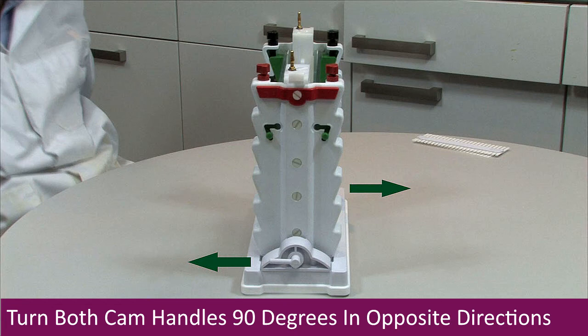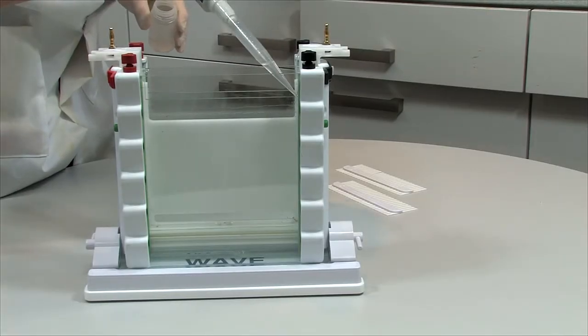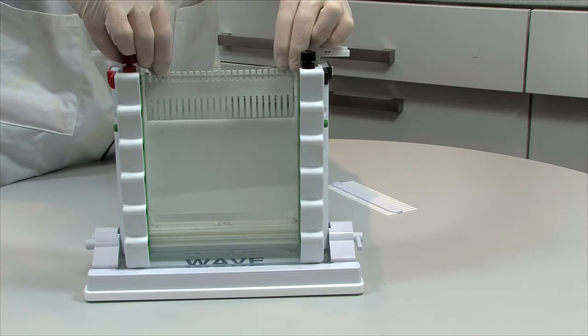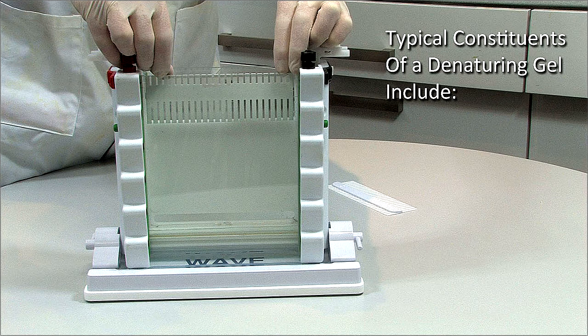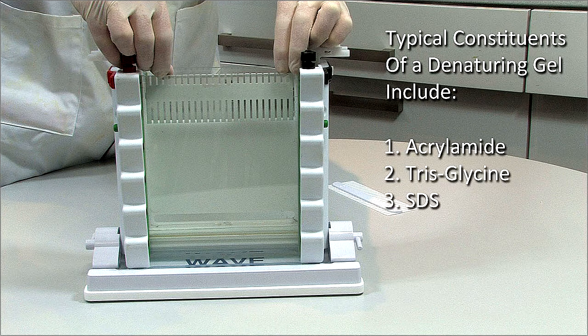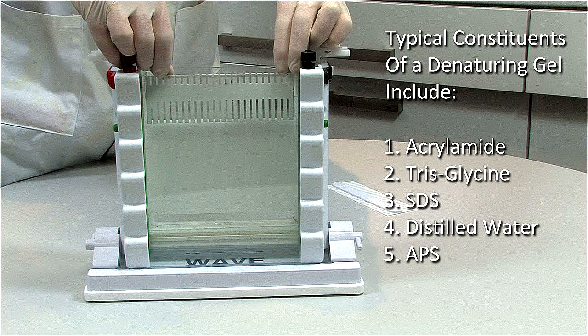The gel solution is now poured between the glass plates and the combs inserted. Typical constituents of a denaturing gel include acrylamide, tris-glycine, SDS, distilled water, APS, and TEMED. The standard gel formulation may vary according to the acrylamide percentage, usually higher in a resolving gel, but the constituents remain the same.